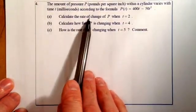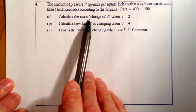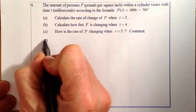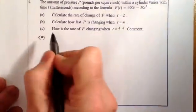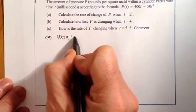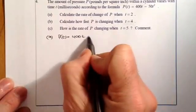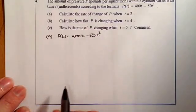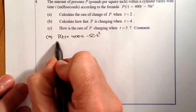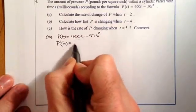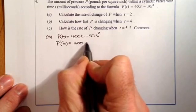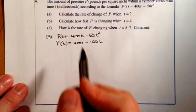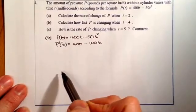The first thing we're going to do is calculate the rate of change. So I should be thinking differentiation, the rate of change of P when t equals 2. Let's do part A. I'll start with the formula, 400t minus 50t squared. I'll just go straight ahead and differentiate that. So that's going to give me 400 minus 100t. So that's my differentiated formula that I'm going to be working with.